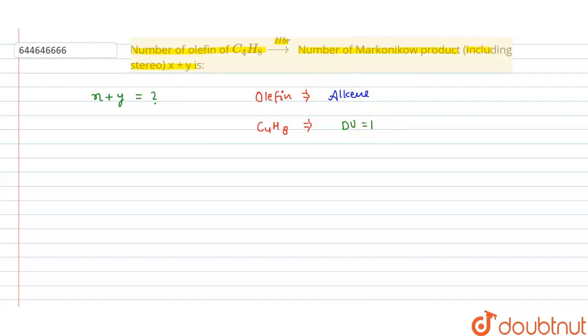Now according to this, we are writing some products over here. Let's say first we make the structures of this: CH3-CH2-CH double bond CH2. One is this possible. Another is we are making the isomer, so this is CH3-CH double bond CH single bond CH3.